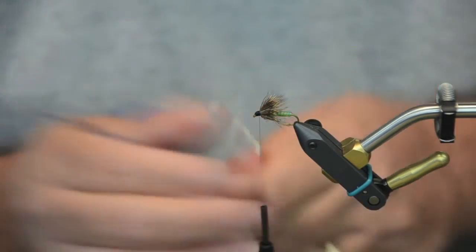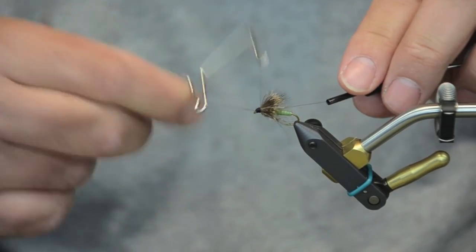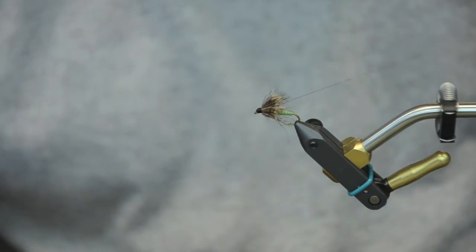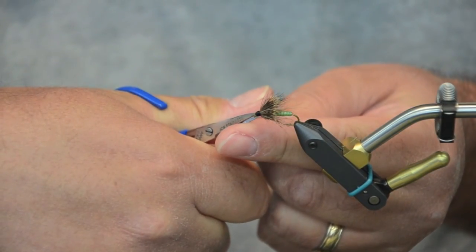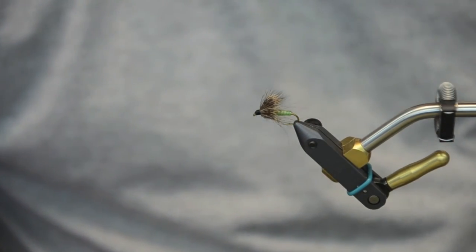So, to cap it off, you can fish this dry or wet. You can swing it. You can sink it and lift it. It all catches fish this time of year when those McKenzie caddis start popping. And there's your McKenzie wet with the chewy skin.